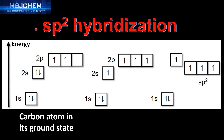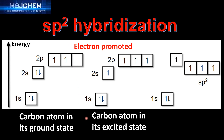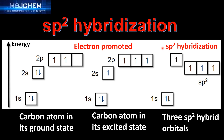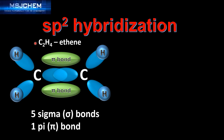Next we look at SP2 hybridization. We start with the carbon atom in its ground state, promote an electron, giving the carbon atom in its excited state. In SP2 hybridization, we have the mixing of one 2S orbital and two 2P orbitals to form three SP2 hybrid orbitals, leaving one unhybridized P orbital. Next we look at the bonding in C2H4, which is ethene.